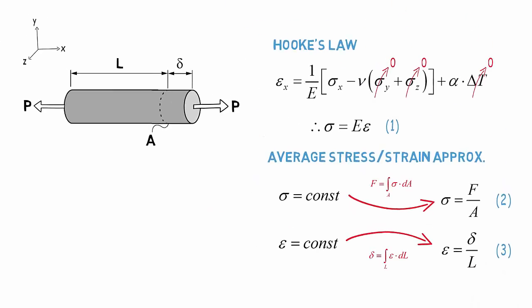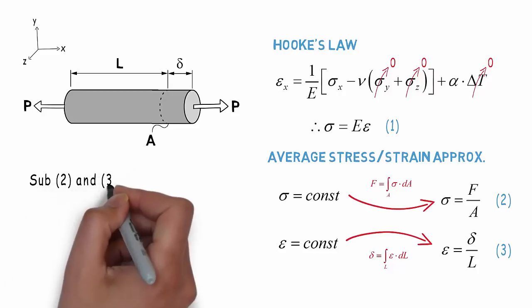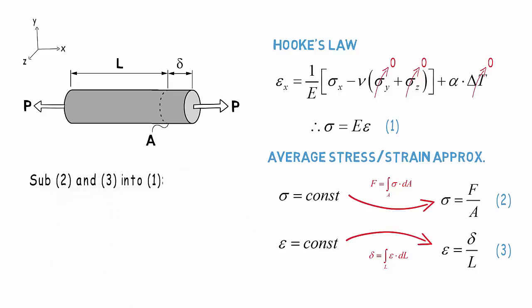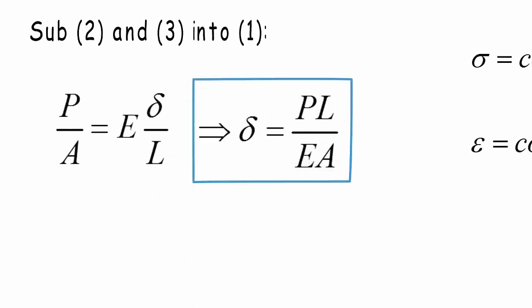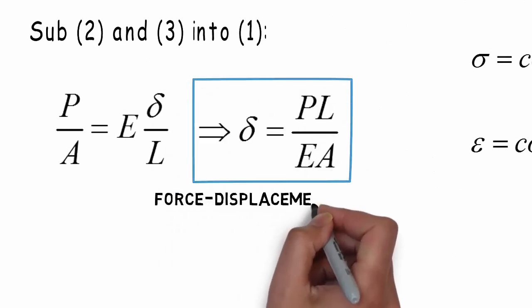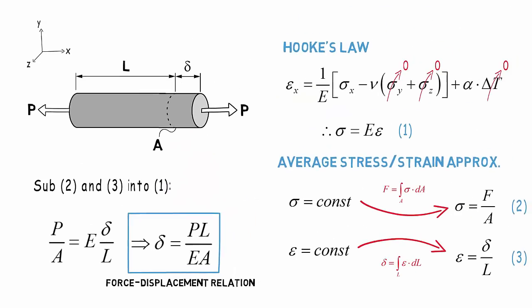If we substitute the results from integrating our stress and strain distributions into our simplified Hooke's Law, we get the following relationship. Rearranging this in terms of deformation, we obtain that delta is equal to P times L divided by E times A. We now have our first force displacement relationship.